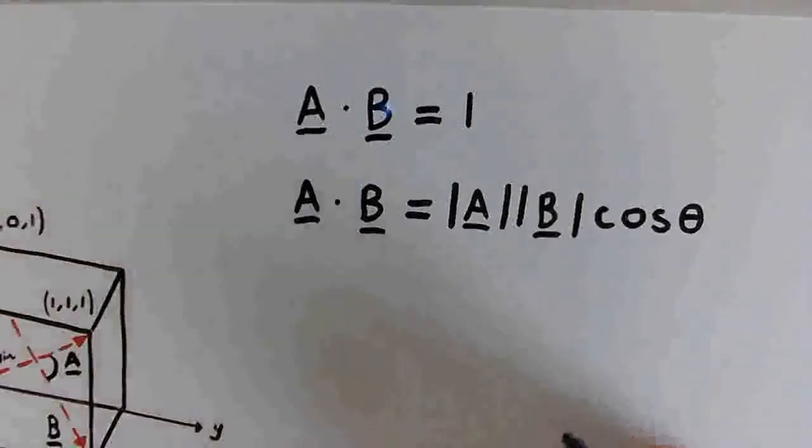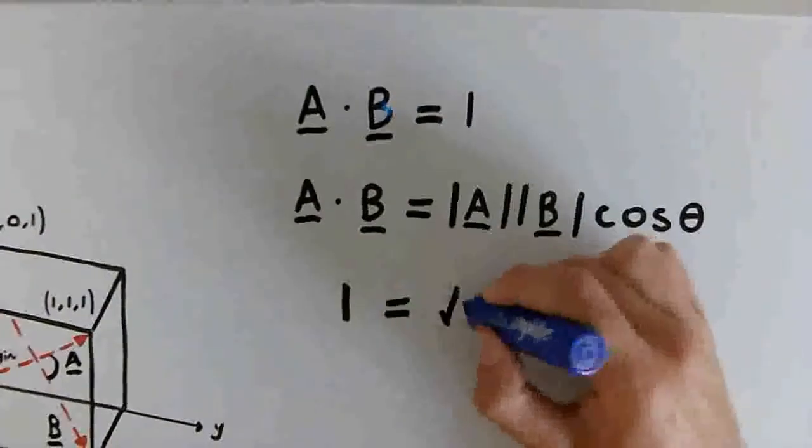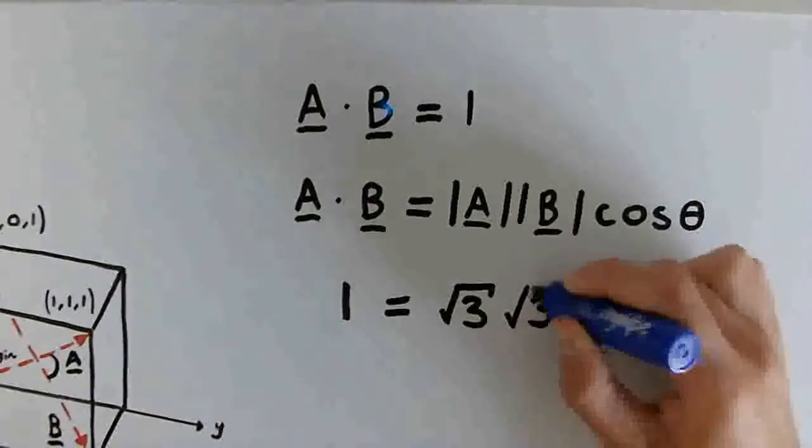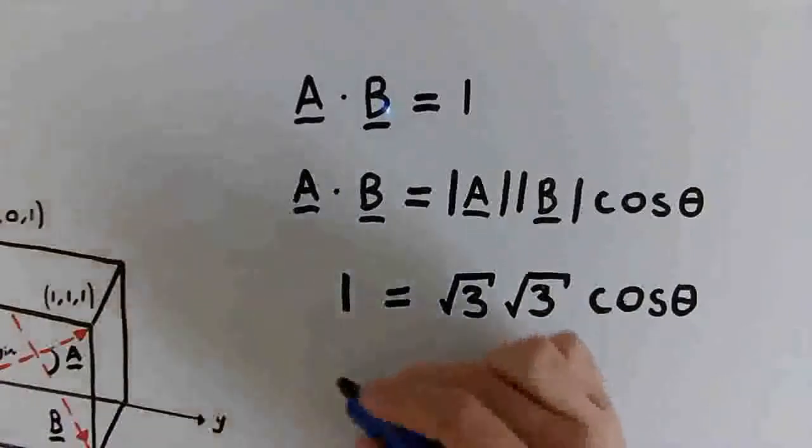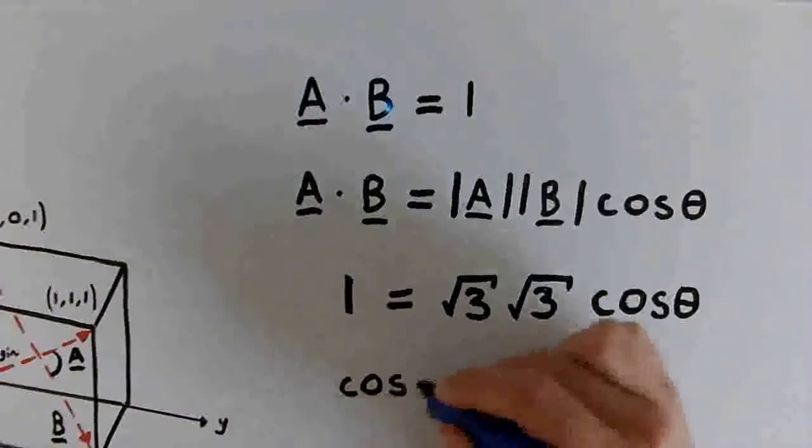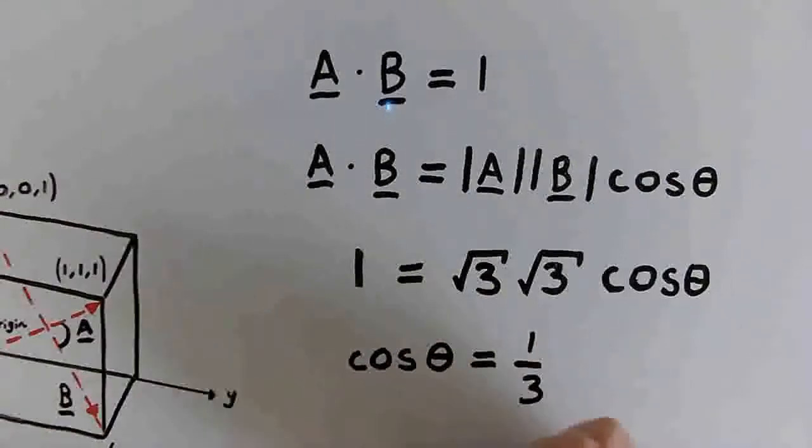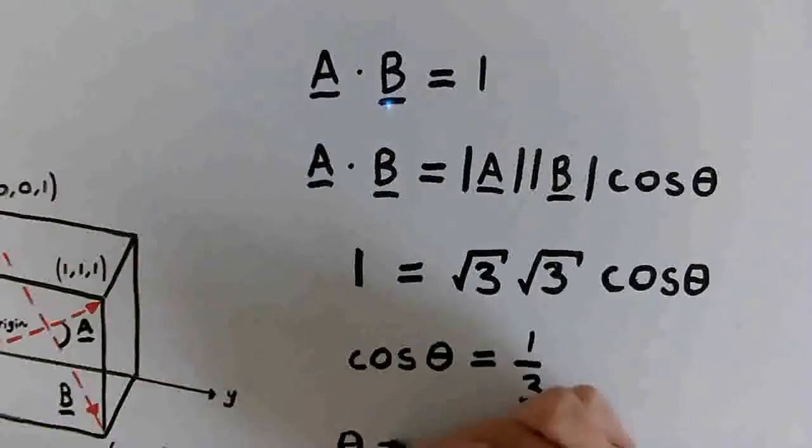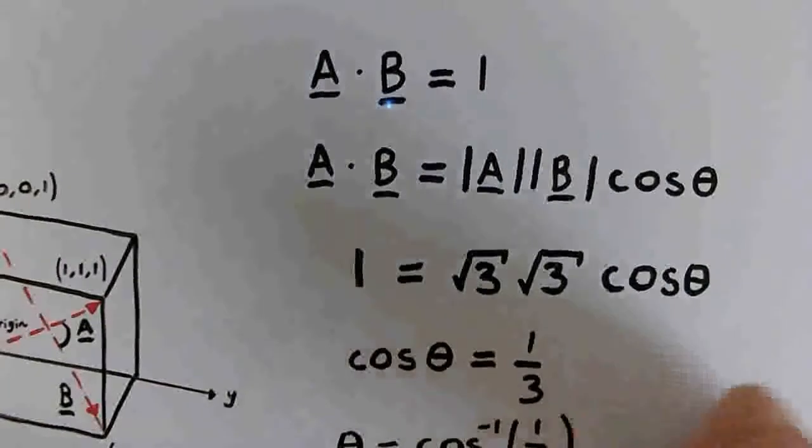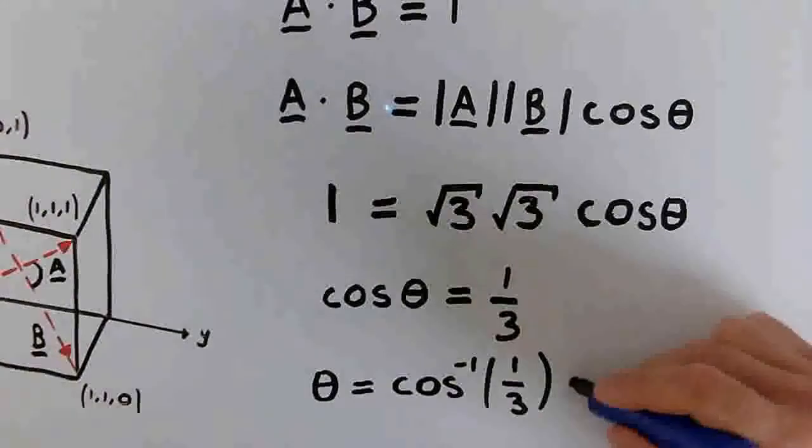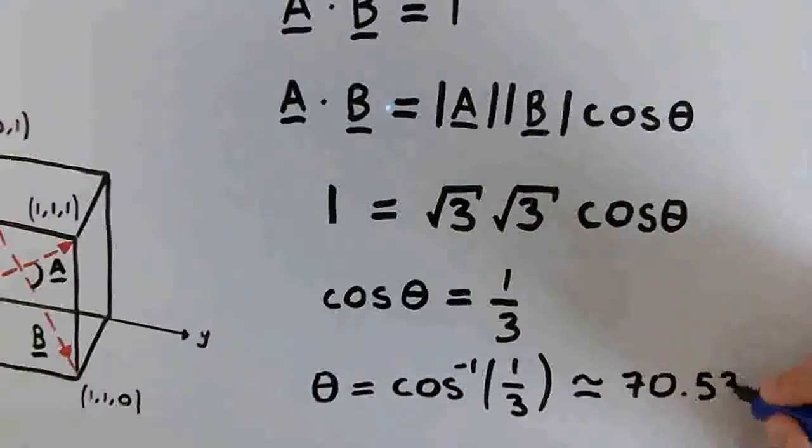Okay, so now we can start filling in the gaps here in this equation. We have 1, because we know the dot product of A and B is 1, equals the square root of 3 times the square root of 3 times cos theta. And now we can rearrange for cos theta being equal to 1 over 3, and then plugging into your calculator that theta is equal to the inverse cosine of 1 over 3. We should find that in degrees this is approximately equal to 70.53 degrees.